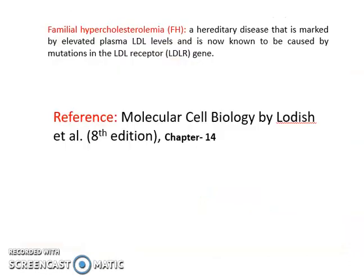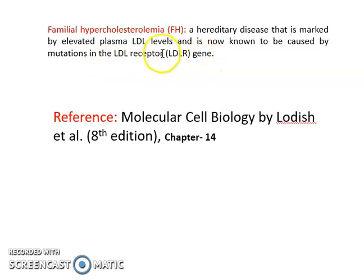An important related disease is familial hypercholesterolemia. It is a hereditary disease marked by elevated plasma LDL levels because a mutation in the LDL receptor prevents LDL and cholesterol from being taken up into the cell, causing decreased cellular uptake and elevated plasma levels. This content is from Molecular Cell Biology by Lodish, eighth edition, Chapter 14.